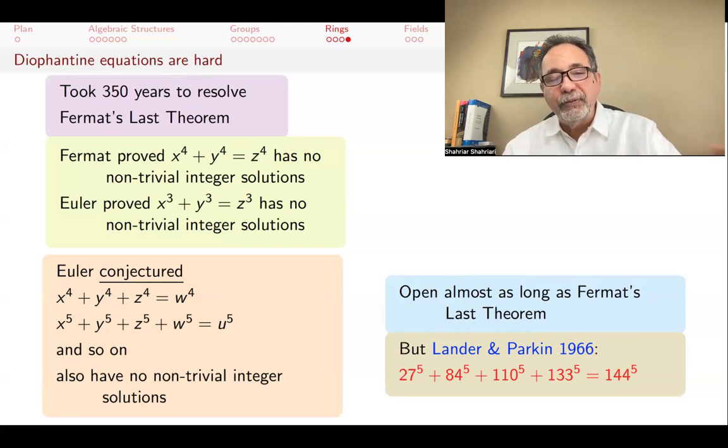Later on, people came up with other examples including for that fourth degree equation. The problem with Diophantine equations is that some combinations of seemingly random set of integers can satisfy certain properties and others can't. And a theory has to be developed enough to be able to handle all these quirky examples. And that makes it very complicated.